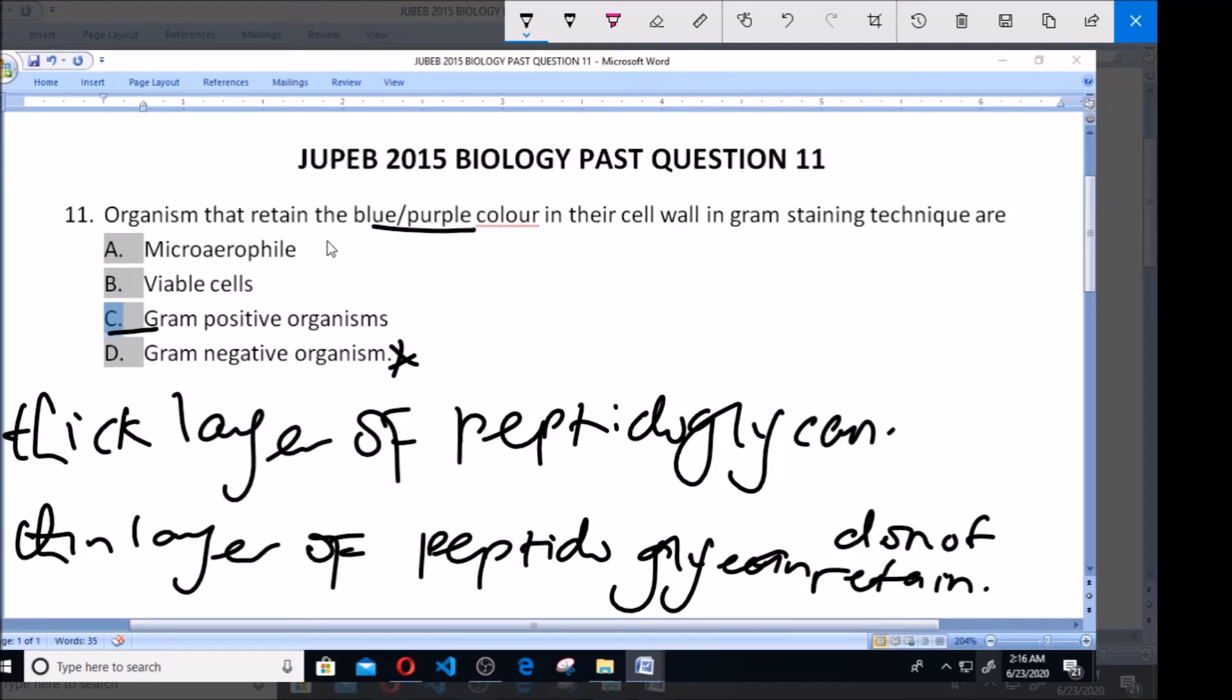Micro-aerophiles are organisms that require oxygen to survive, while variable cells are cells that are alive.